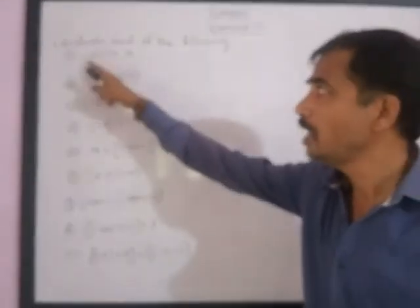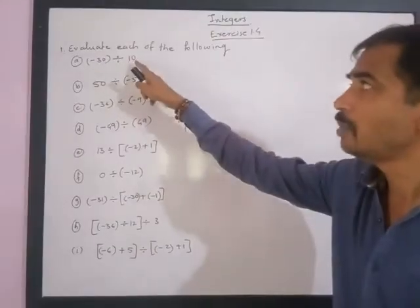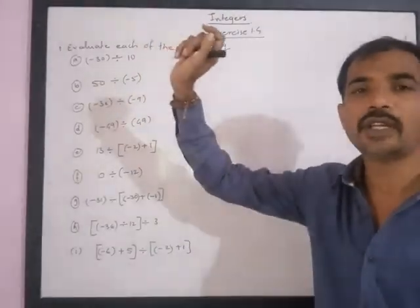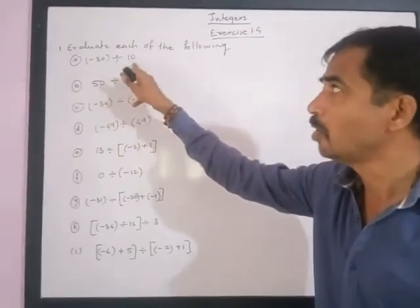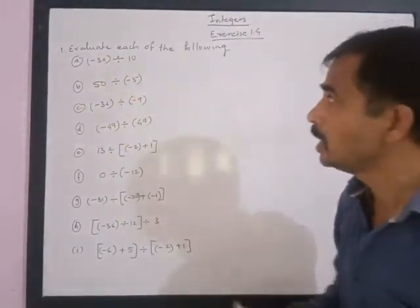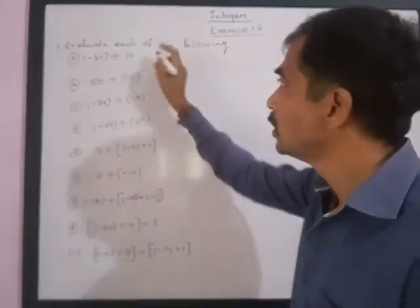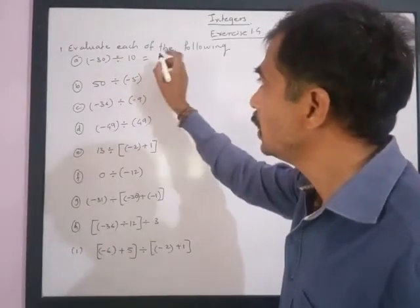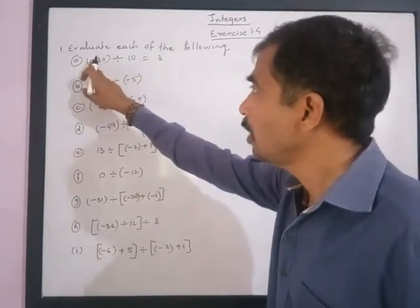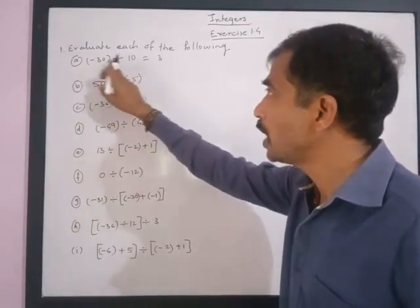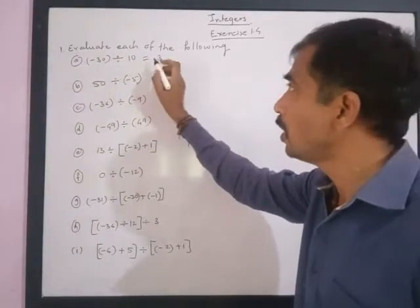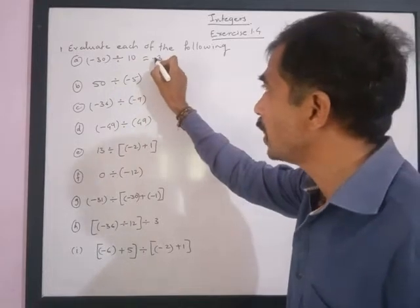When we divide a negative integer by a positive integer, we have already studied the rule: divide the whole number by the whole number. So 30 divided by 10 is 3, and we have to give the negative sign. If a negative integer is divided by a positive integer, we give a negative sign.